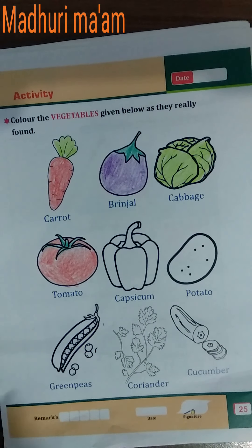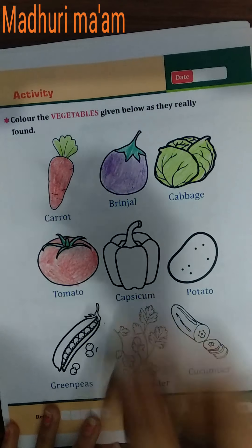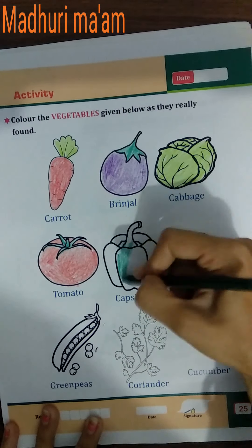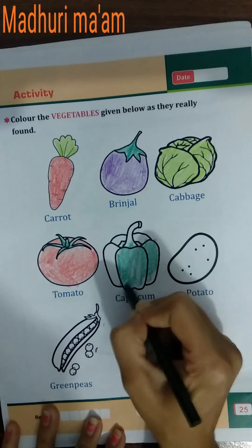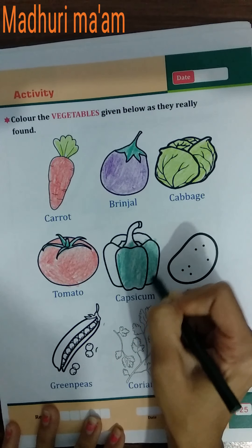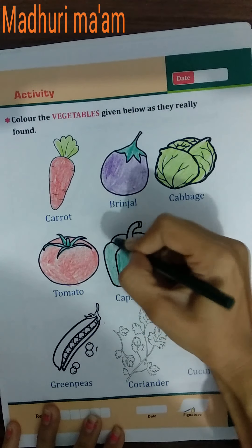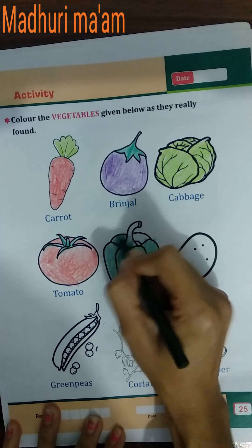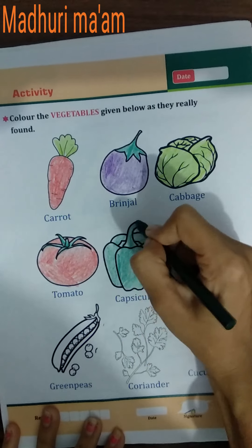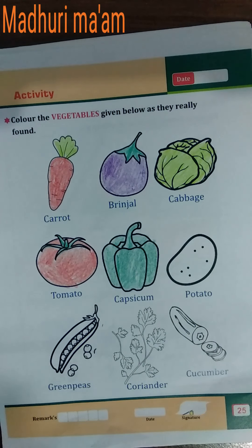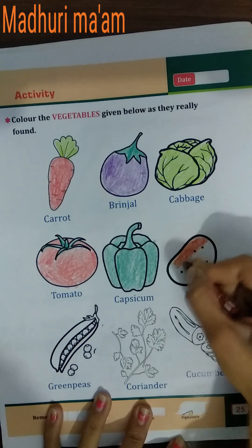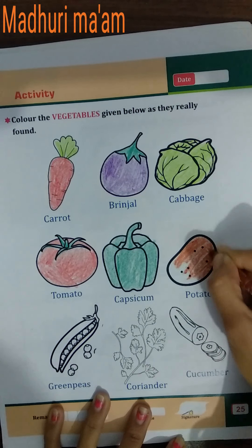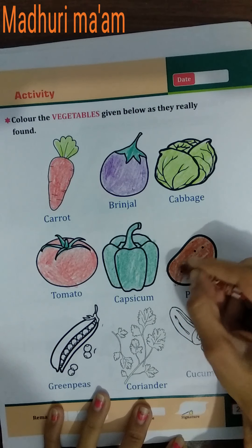Now next is capsicum. What is the color of capsicum? Green color. So do green color in the capsicum picture. Slowly, slowly. Now next picture is potato. What is the color of potato? Brown color. So do brown color here.